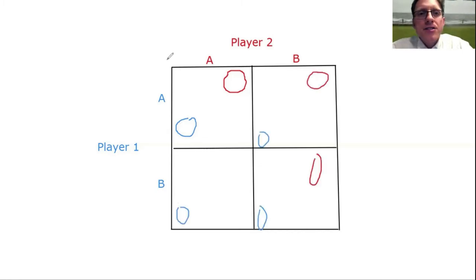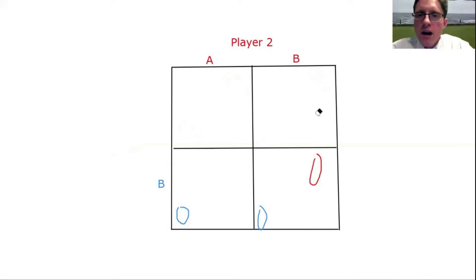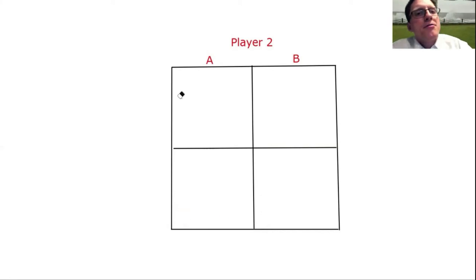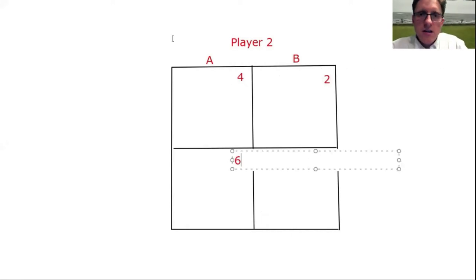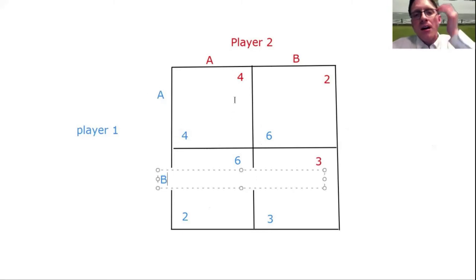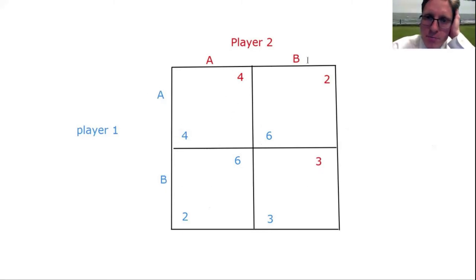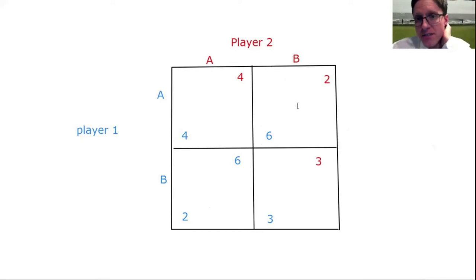The payoffs are going to be represented by numbers where higher is better. So let's fill this out for a particular game. For example, if player two chooses B and player one chooses A, then player one gets a payoff of six and player two gets a payoff of two.